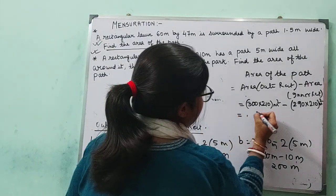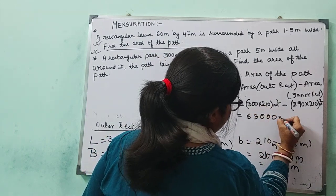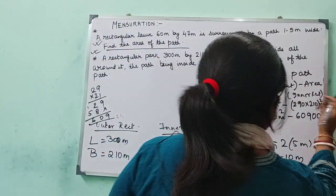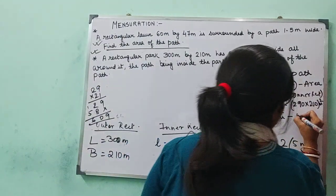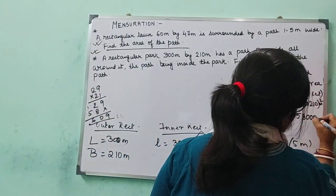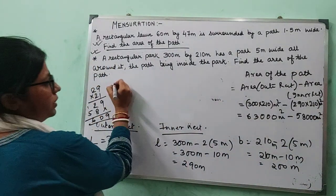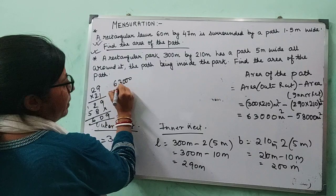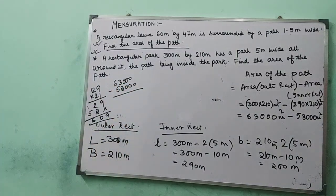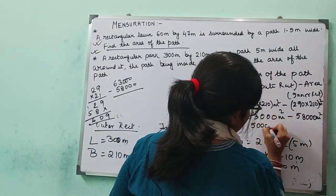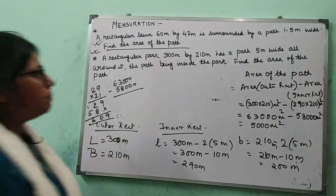So the area of the outer rectangle is 300 × 210 = 63,000 square meters, and the area of the inner rectangle is 290 × 200 = 58,000 square meters. The difference is 63,000 minus 58,000, which is 5,000 square meters. That is the area of the path.